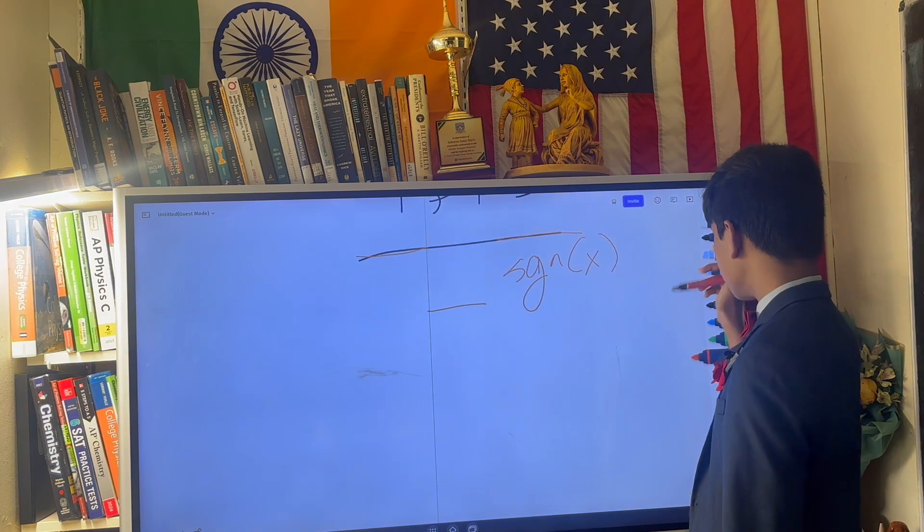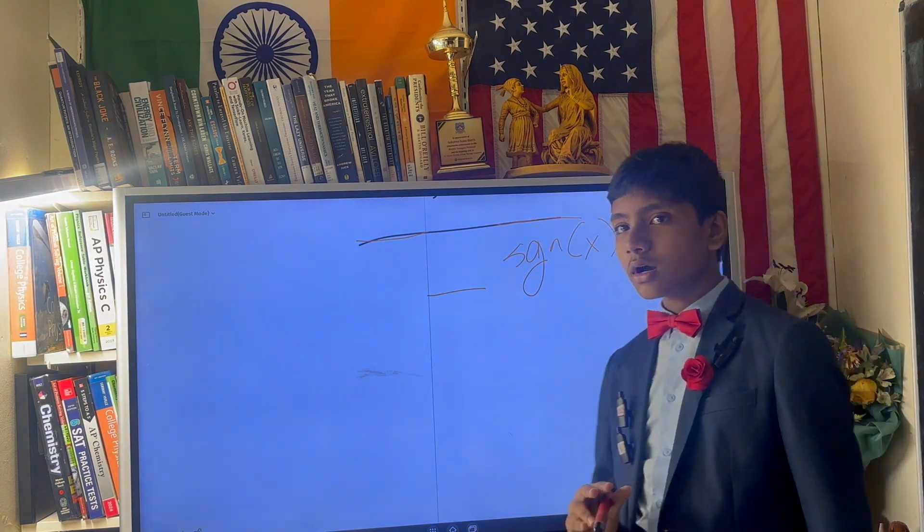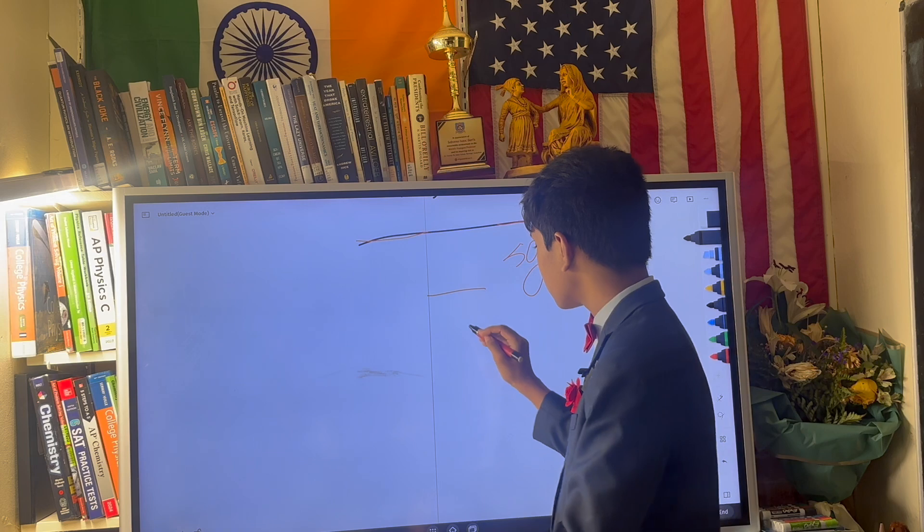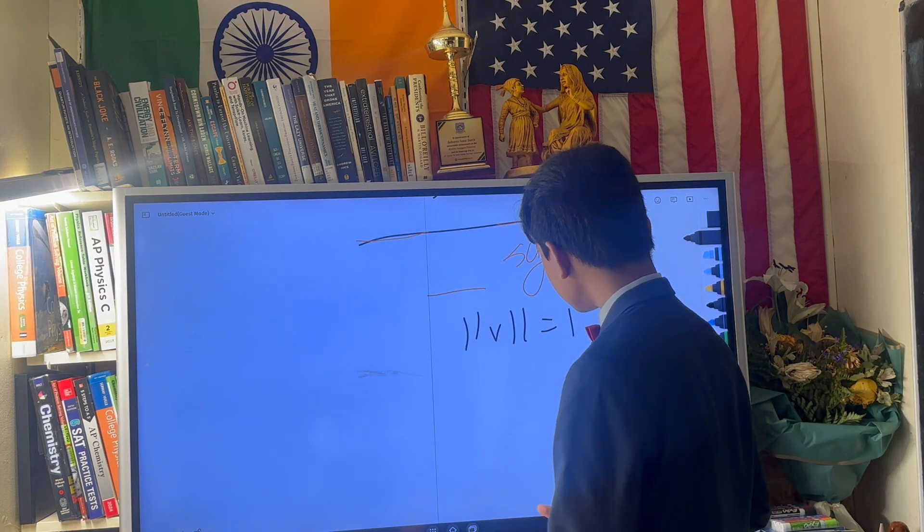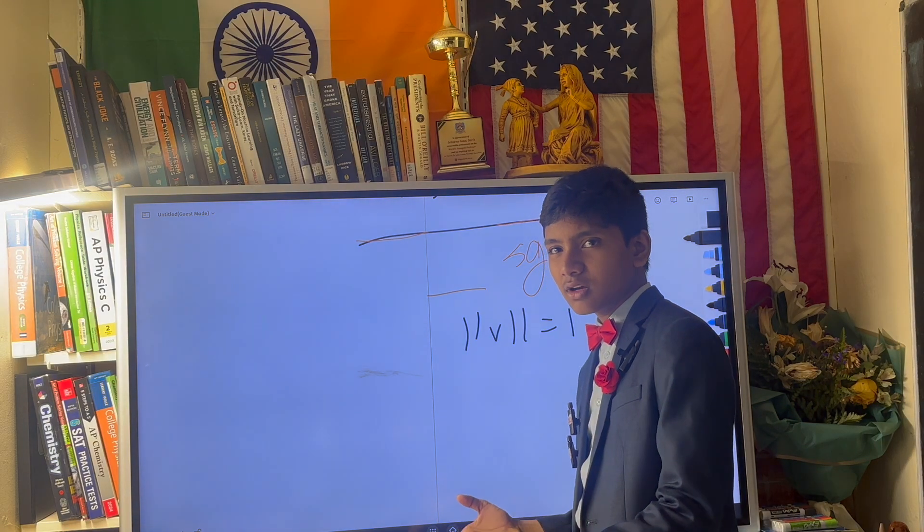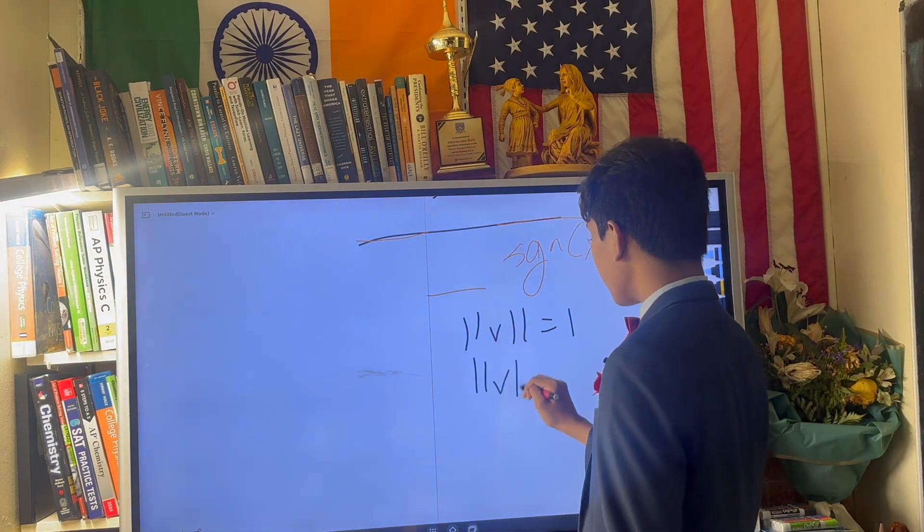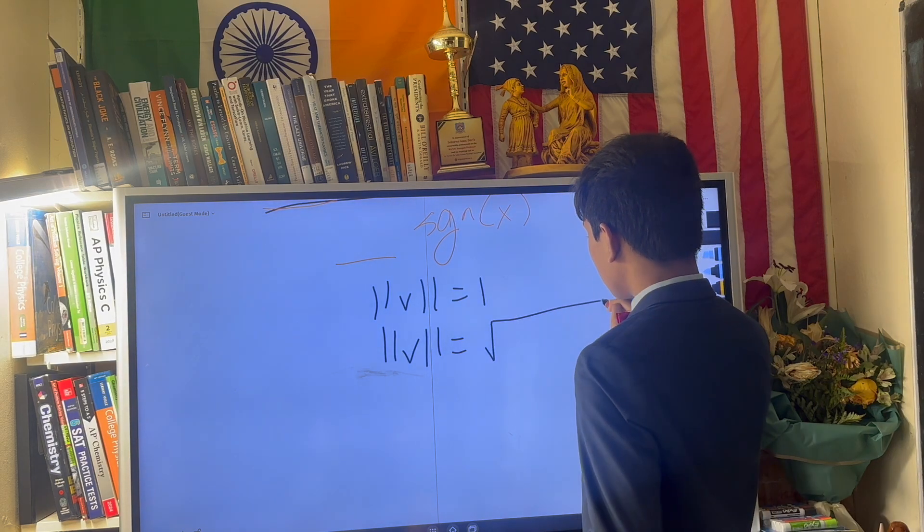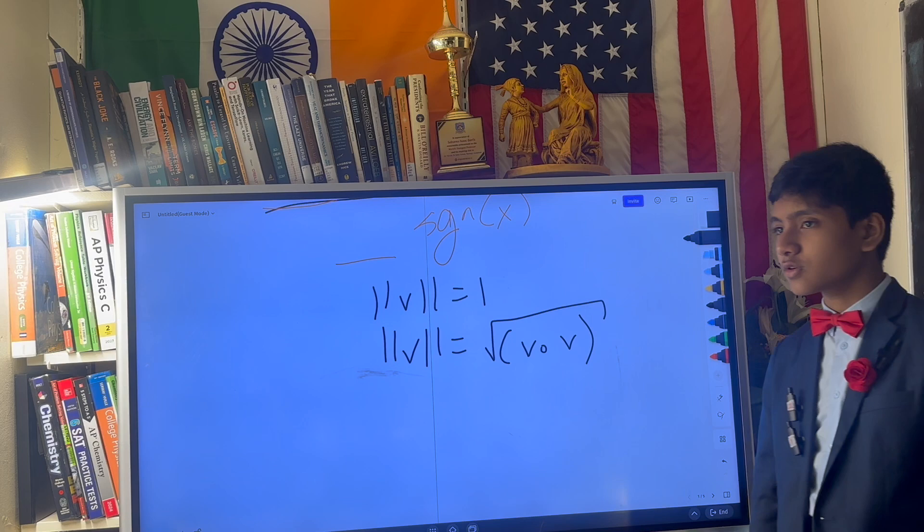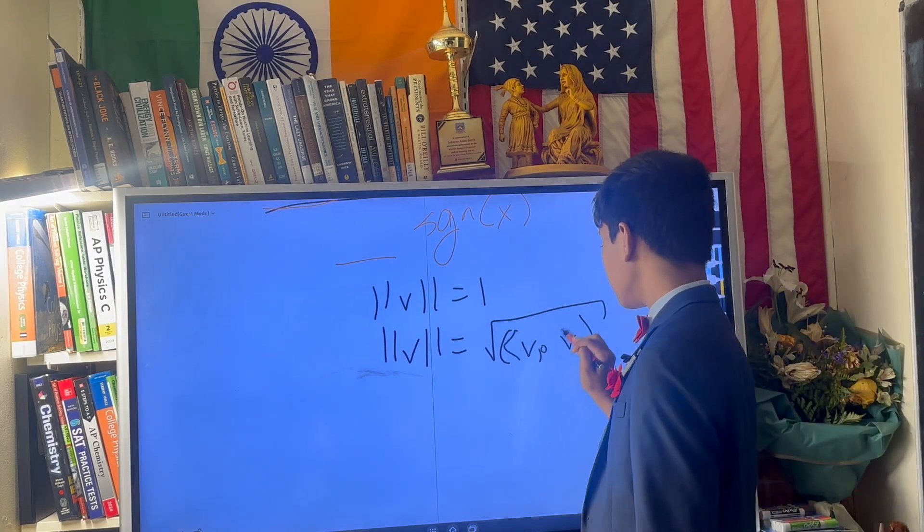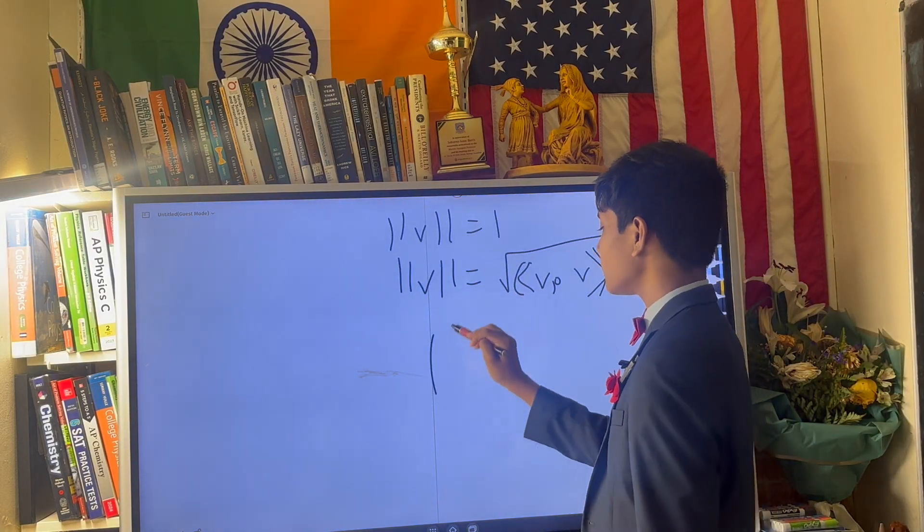What does normal actually mean? Well, a normal vector is a vector whose norm is one. But what is the norm even defined as? Well, the norm is defined as the square root of the result of taking the inner product of the vector with itself. So, hey, wait a second, what if we apply that to functions?